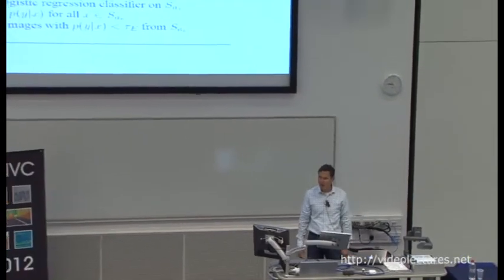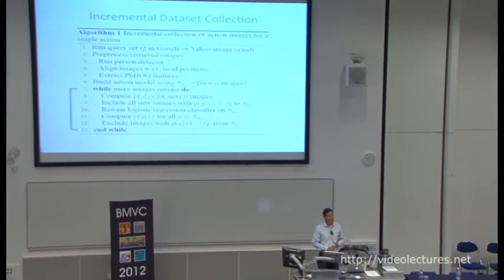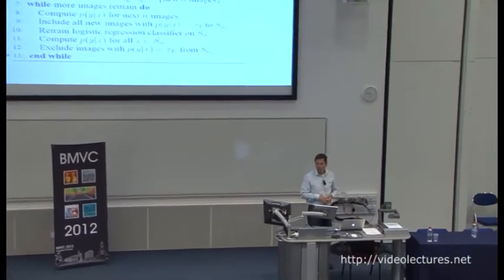The incremental procedure works as follows: you run a query, preprocess retrieved images, do an alignment of head positions since they tend to be more stable, extract PBHog features, and build an action model using logistic regression. One key insight is that keeping the model simple and the outlier rejection method simple tends to work better than using a more complicated procedure. Then there's a loop: while more images remain, we compute the posterior, include those where it exceeds a threshold, retrain the logistic regression, and continue.